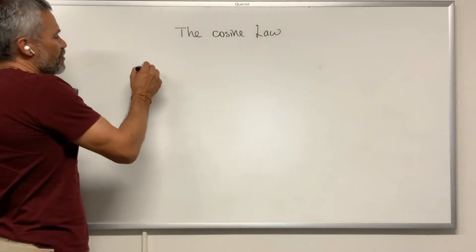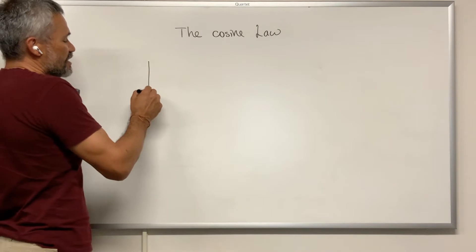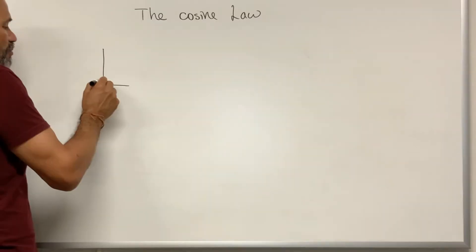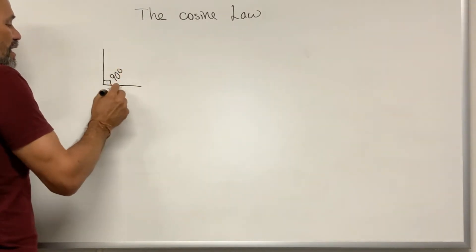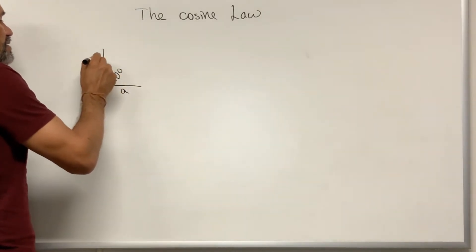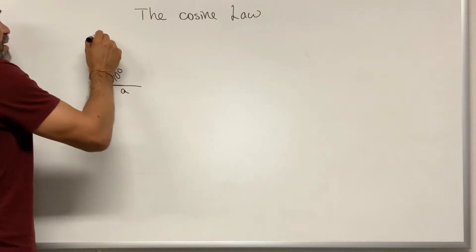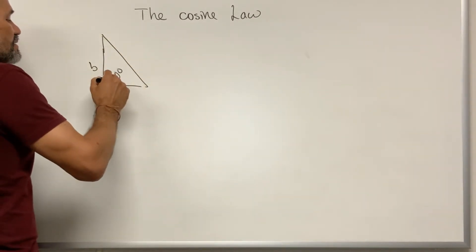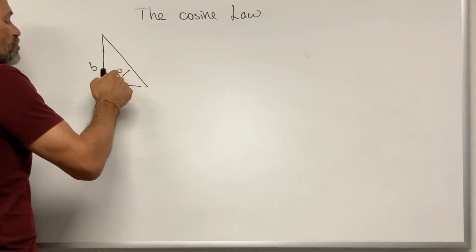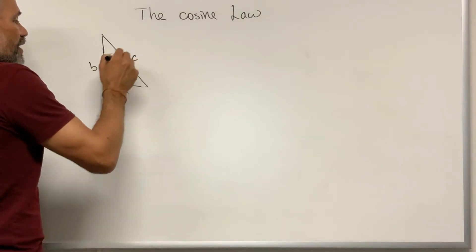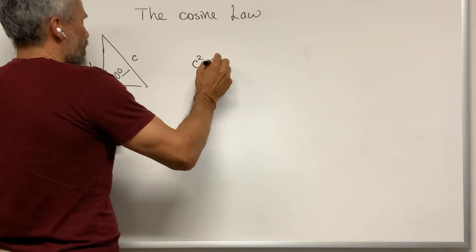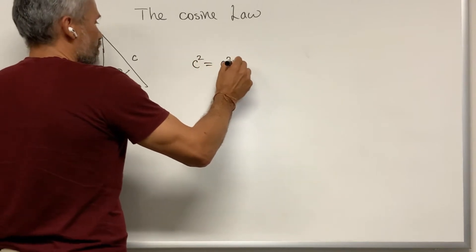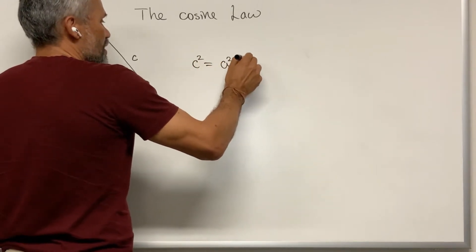The cosine law can be viewed as a generalization of the Pythagorean theorem. Remember that for the Pythagorean theorem, if we have a right angle — if this angle is 90 degrees — and this is A and this is B, then the side opposite to the 90 degrees, called the hypotenuse, satisfies C squared equals A squared plus B squared.